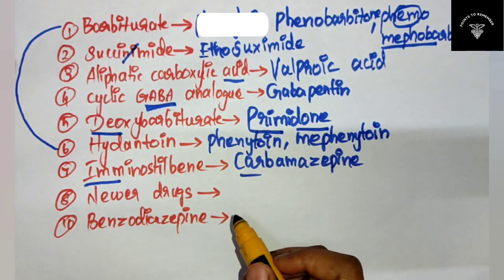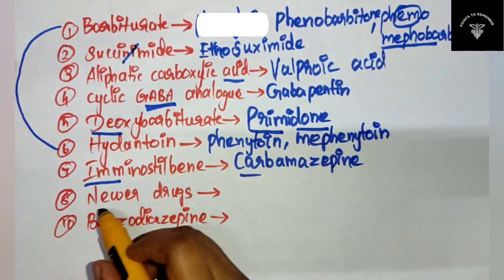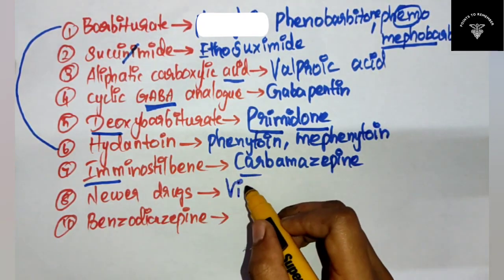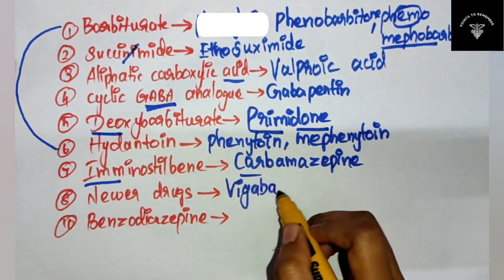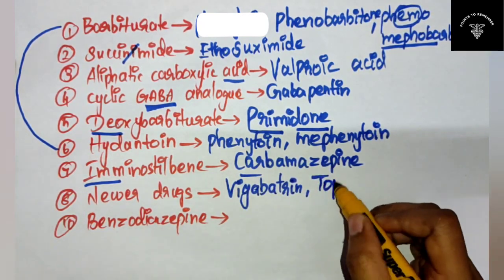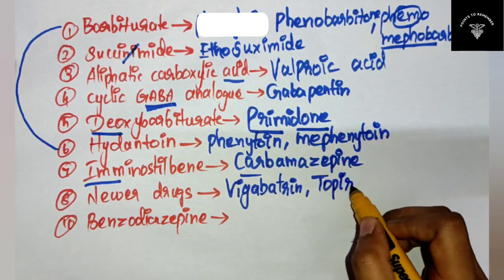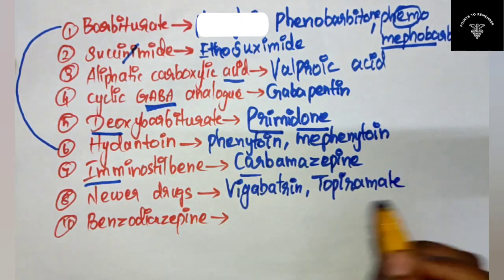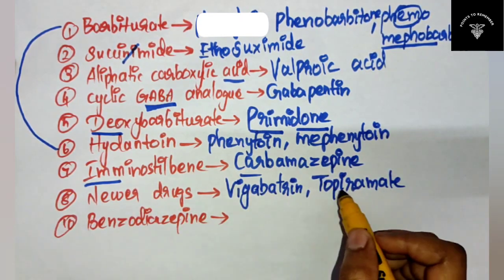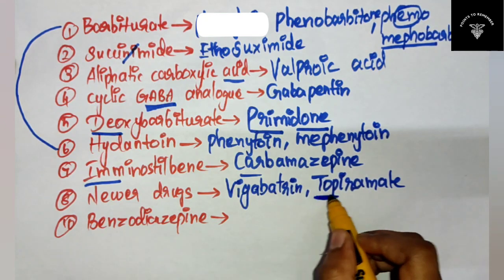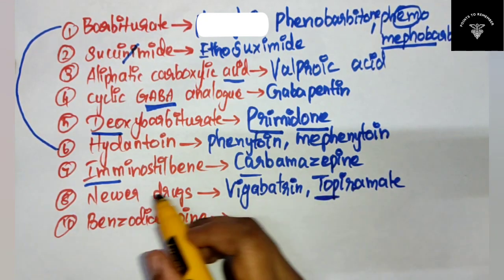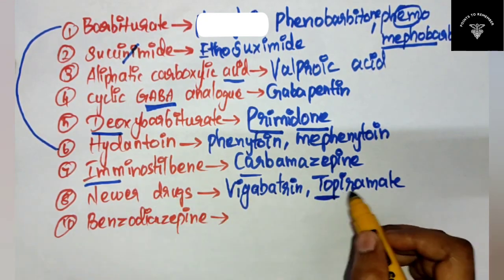And next is your newer drugs. Newer drugs include vigabatrin and topiramate. You can remember: new top car he buys - benz is your top car - newer drugs is topiramate.